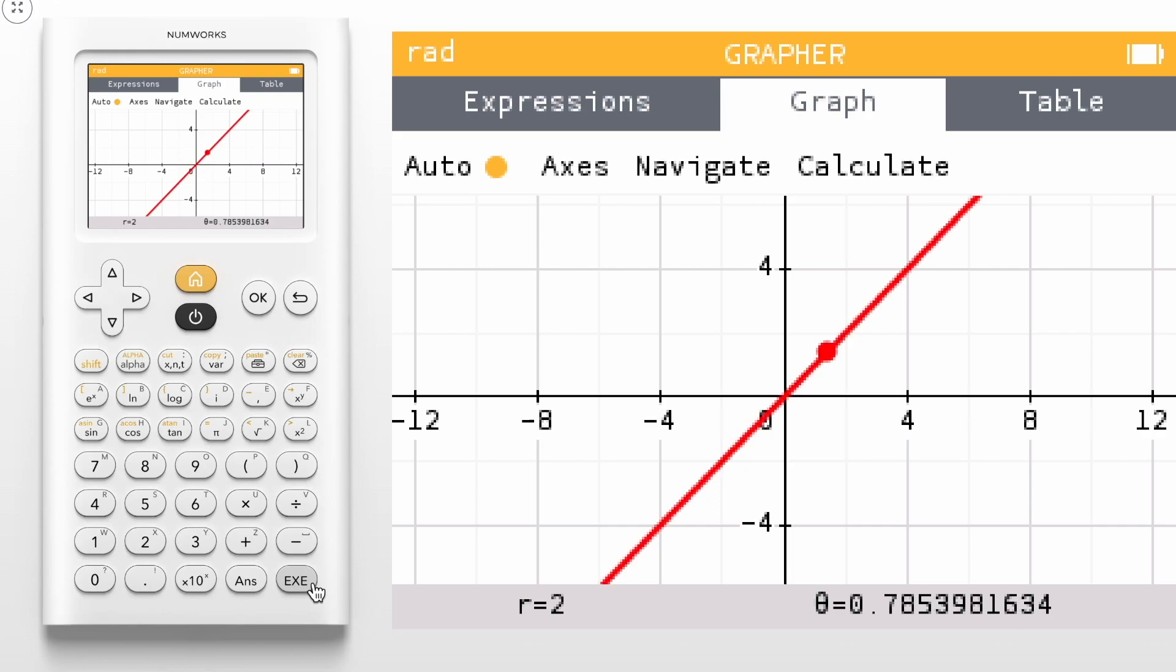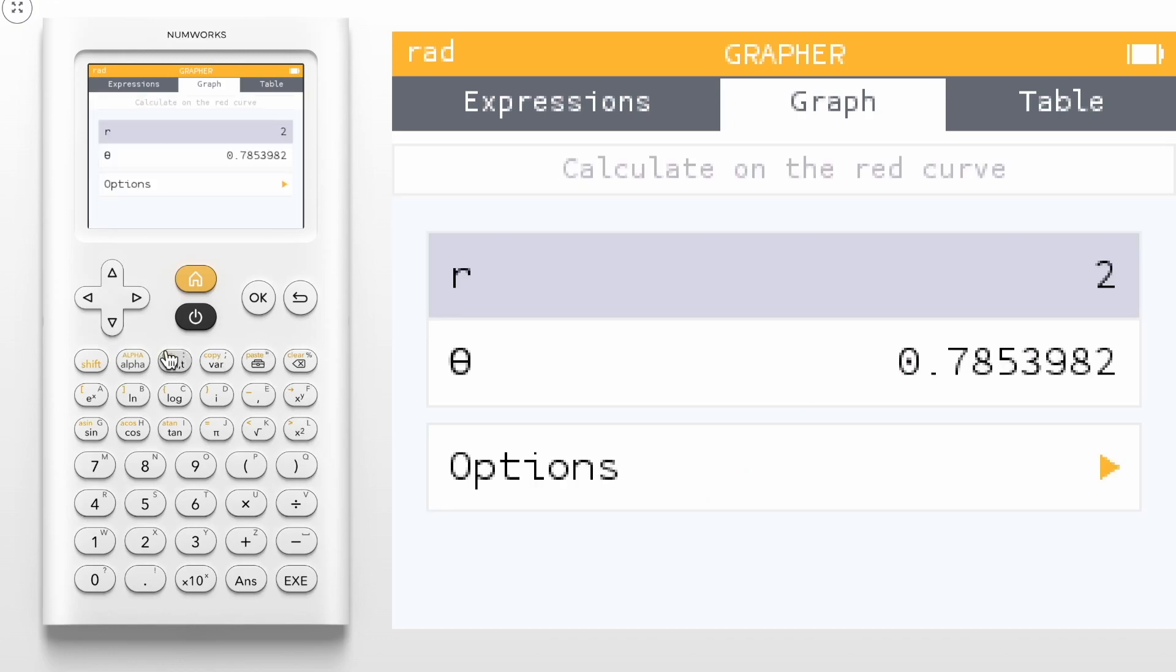To access the options of the polar line, we can press the Toolbox key and navigate down to Options.